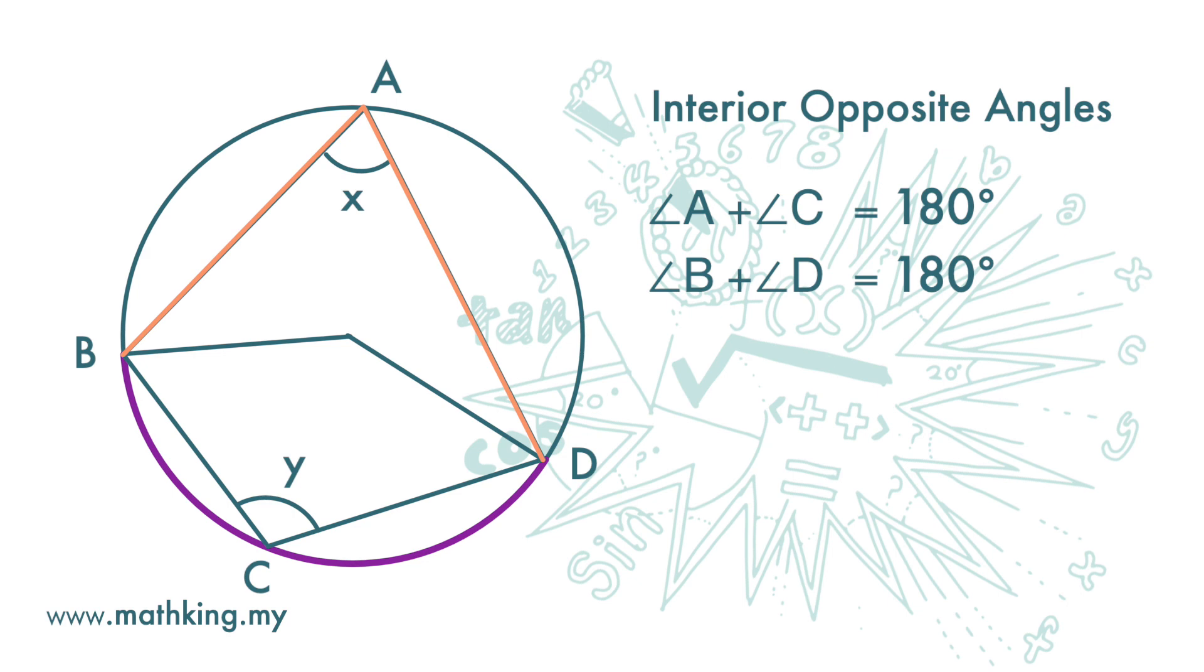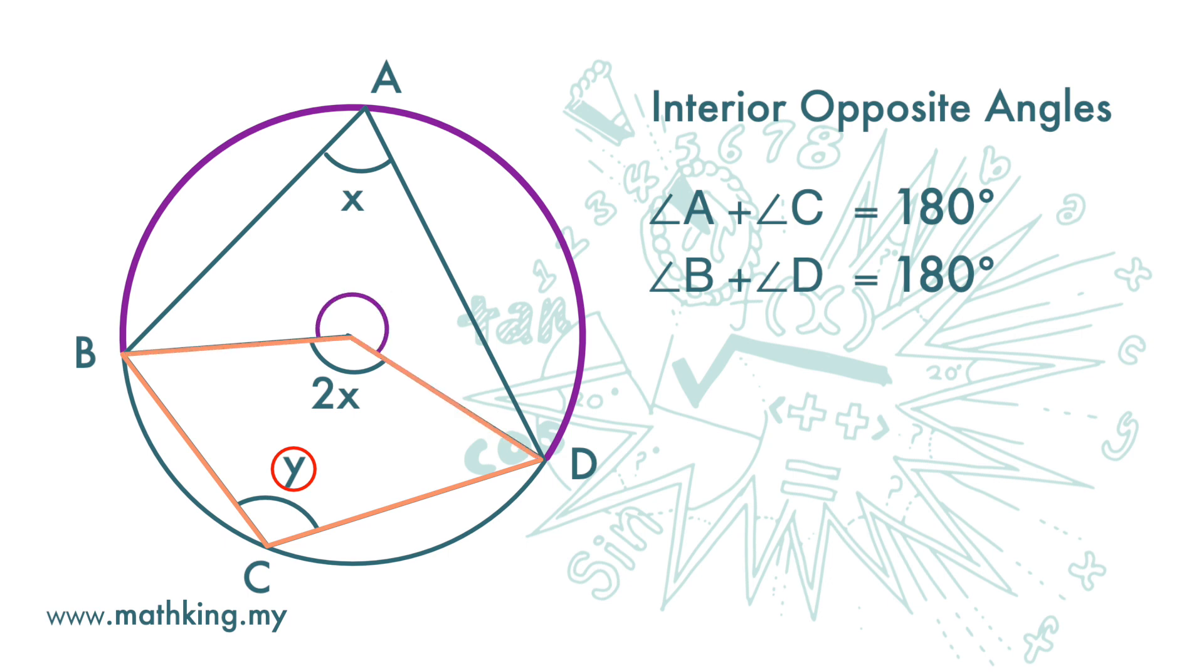...at the circumference is x, then the angle subtended by arc BD at the center will be 2x. Similarly here, the angle at the circumference is y, so the angle at the center here is 2y.